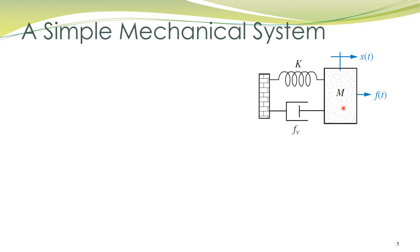Let's now take a simple mechanical system and obtain its mathematical model. This system consists of a mass, a spring, and a damper. One end of both the spring and the damper are fixed and cannot move; the other ends are connected to the mass. An external force f(t) is applied on this mass, which produces a translational displacement x(t).